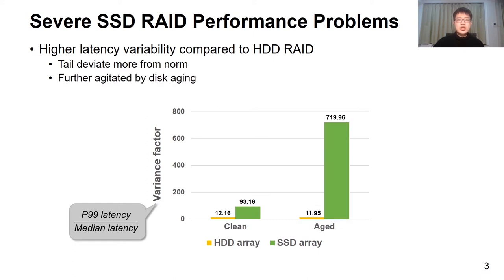When the disks age, HDD reads don't seem to feel it, while SSD reads see this ratio further increase to over 700. The reason is both due to the higher performance variability of individual SSDs than HDDs, as well as the magnifying effect brought by read operations, as the whole array suffers when any member disk slows down.